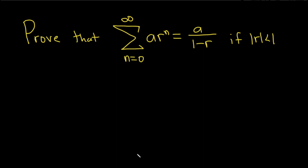In this problem, we're going to prove that this infinite sum is equal to a over 1 minus r if the absolute value of r is less than 1. This is an infinite geometric series, and we're basically proving it converges and it's equal to a over 1 minus r.